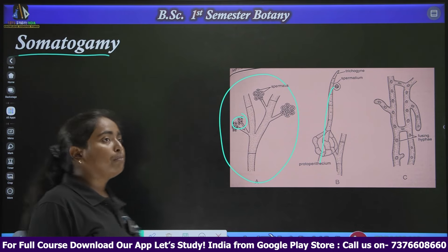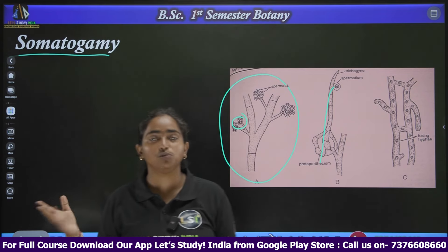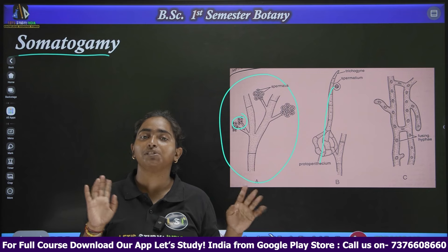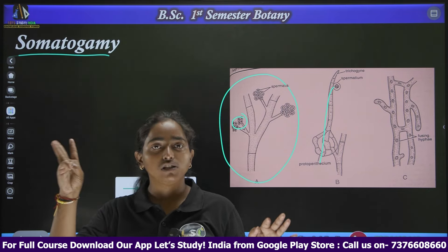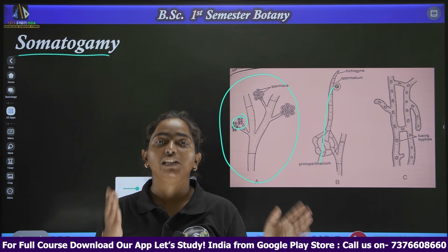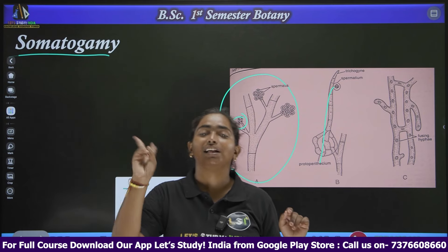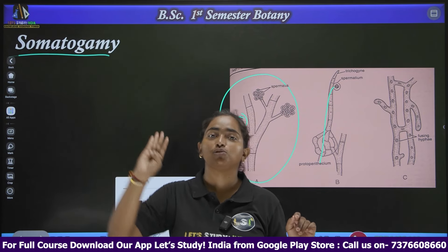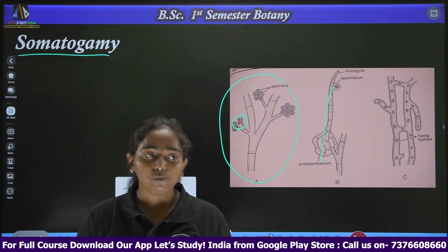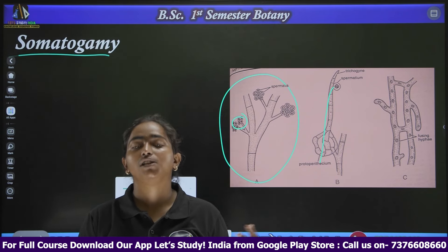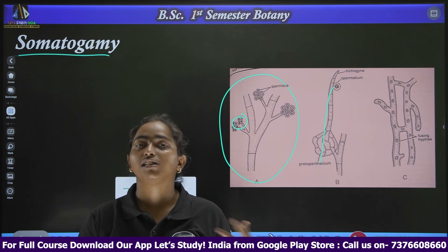This was all about today's video, where we have seen what fungi are, their mode of nutrition, their structure, and the process of sexual reproduction — which has three steps: plasmogamy, karyogamy, and meiosis. Plasmogamy can occur in five ways: planogametic copulation, gametangial contact, gametangial copulation, spermatization, and somatogamy. In the next video, we will cover the remaining general characteristics and the classification of fungi.